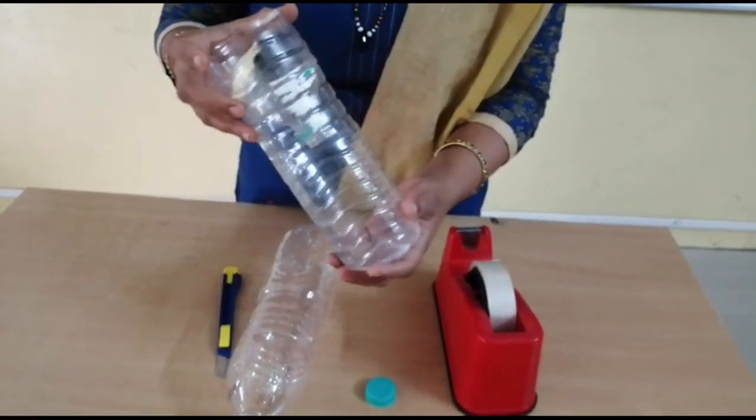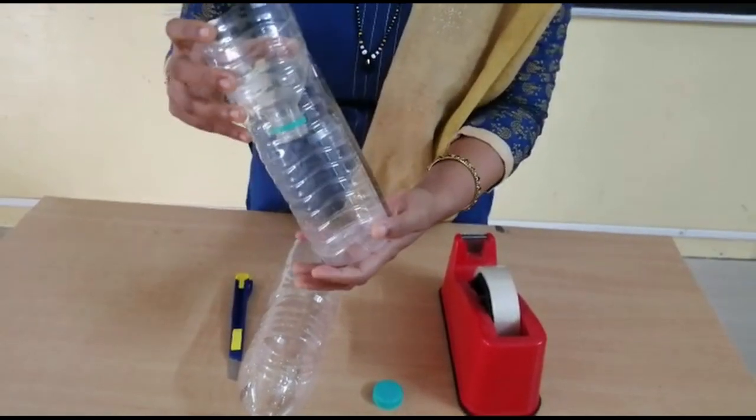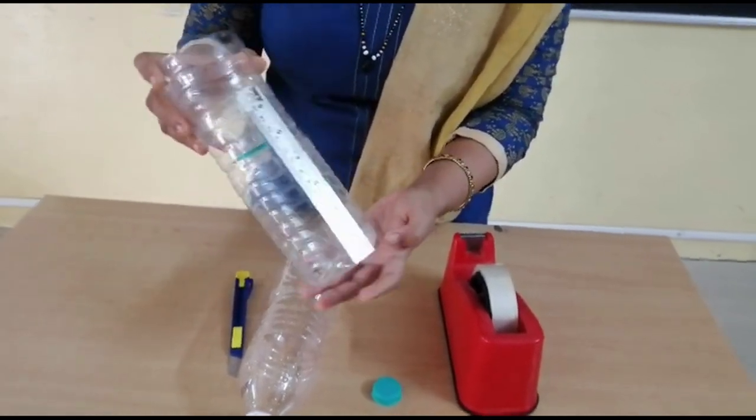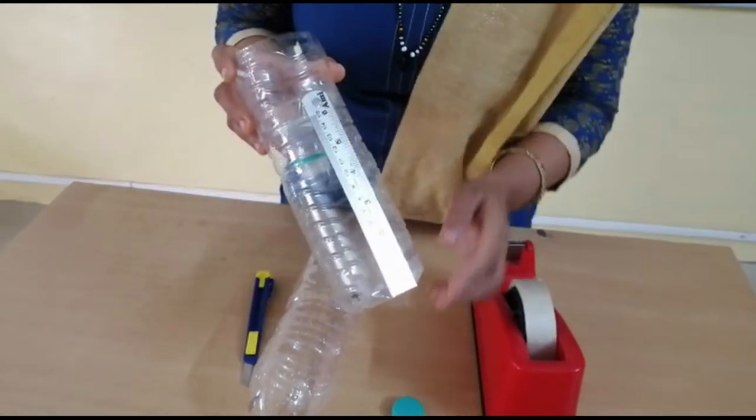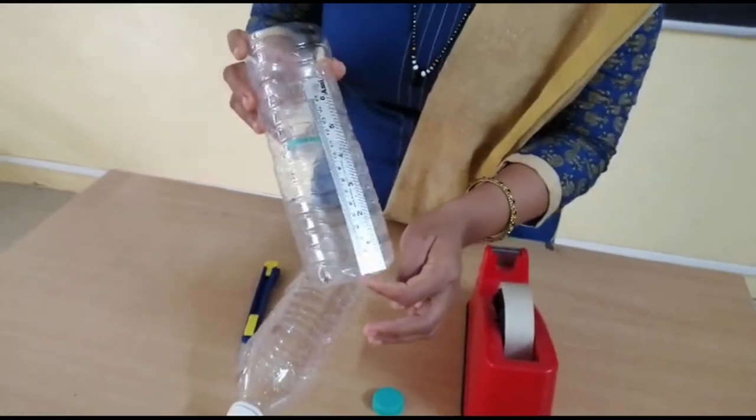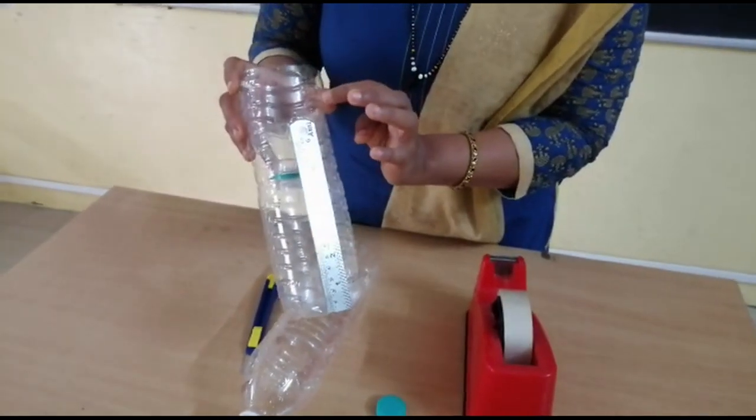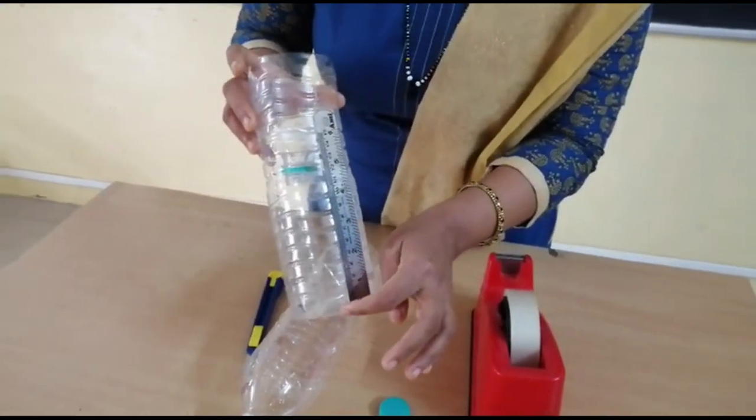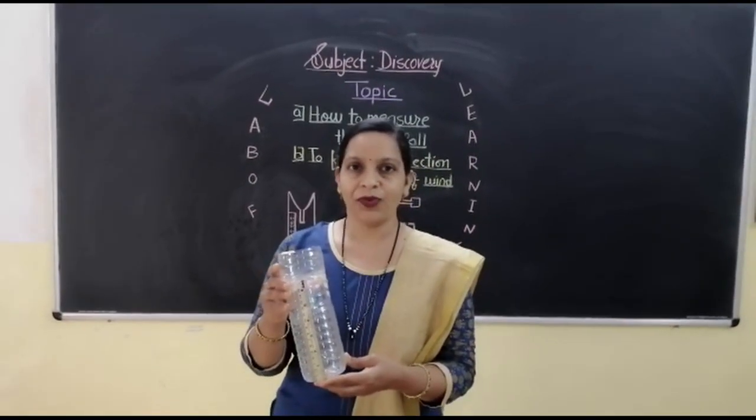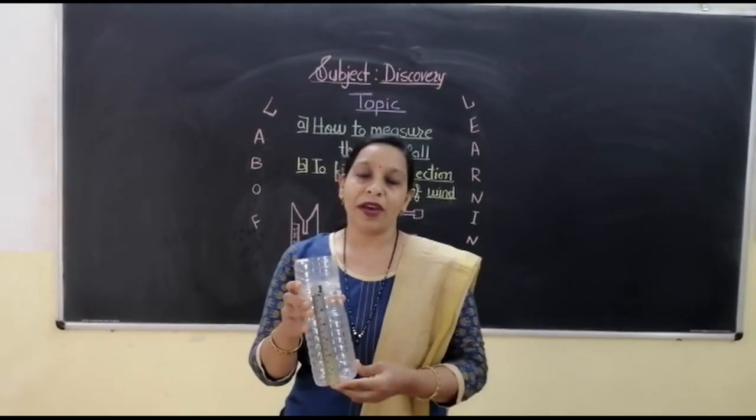Now what is next? We have to mark the measurement. You need to take a ruler that we can fix with the help of cello tape. But remember that zero will be down, and when we have the rainwater, we have to measure from down, from zero.